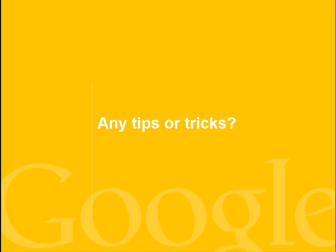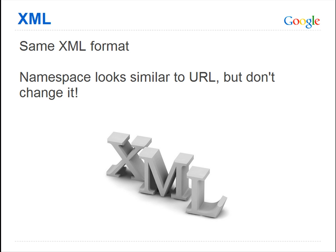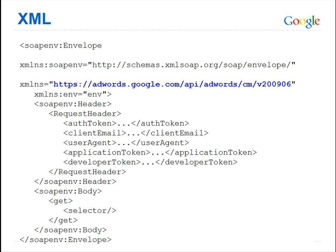There are some important tips and tricks about the Sandbox that you should be aware of. The XML format of the requests sent to the Sandbox are exactly the same as those sent to production. The AdWords API namespace, unlike the URL, should not be changed. Here's an example request sent to the Sandbox. Please note the AdWords API namespace remains adwords dot google dot com.